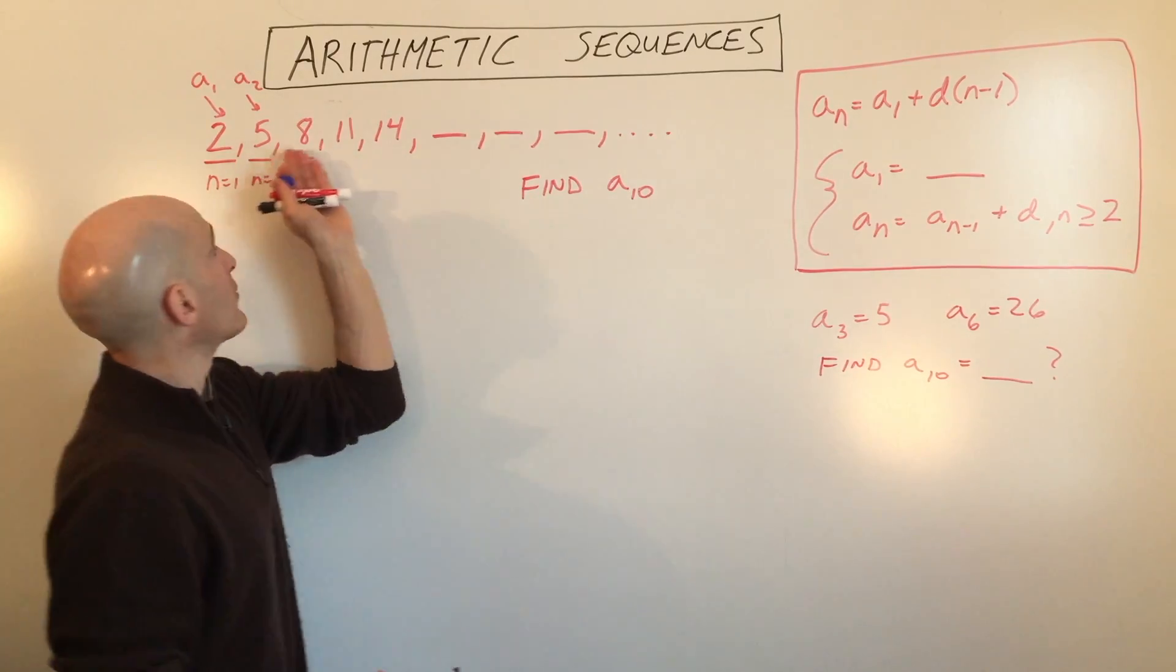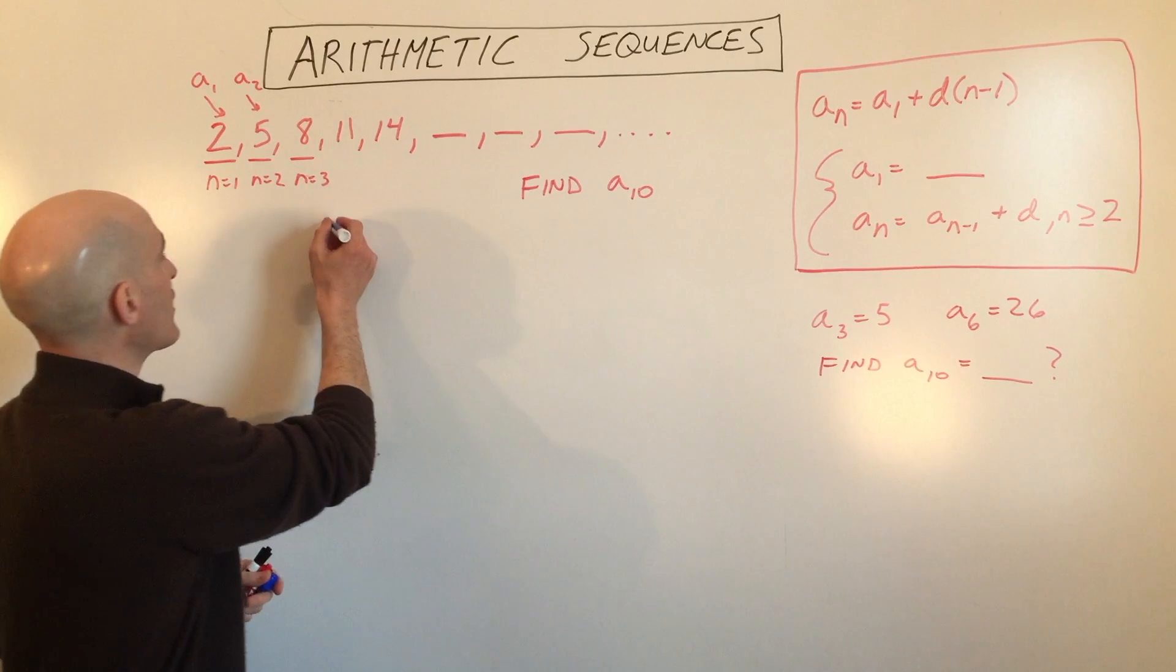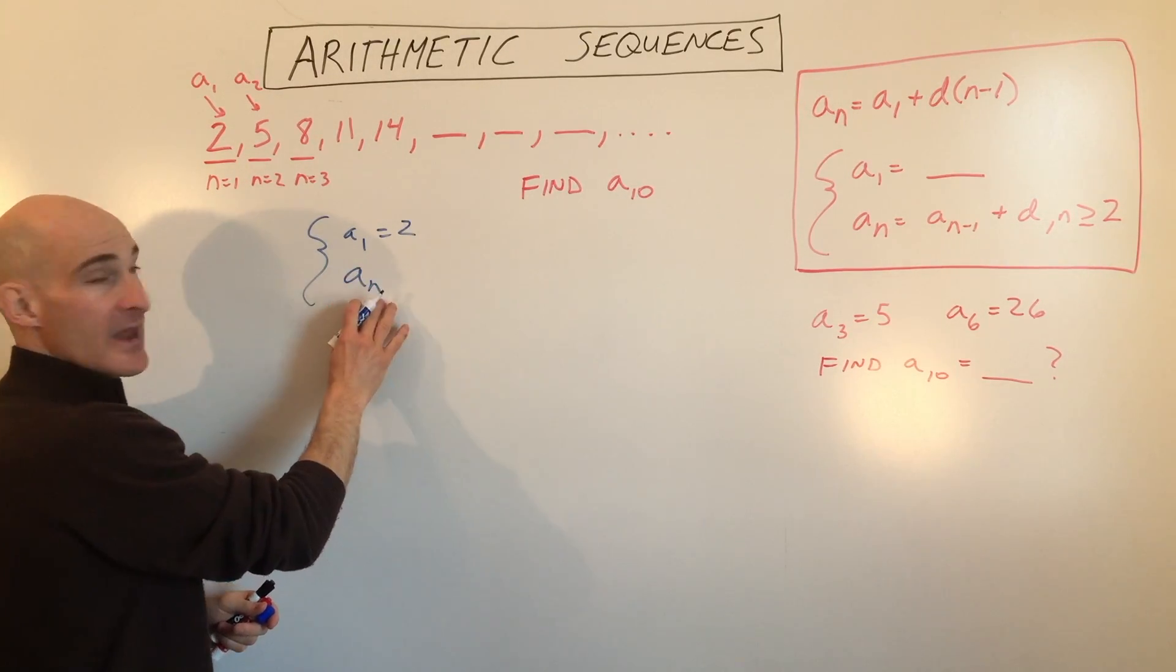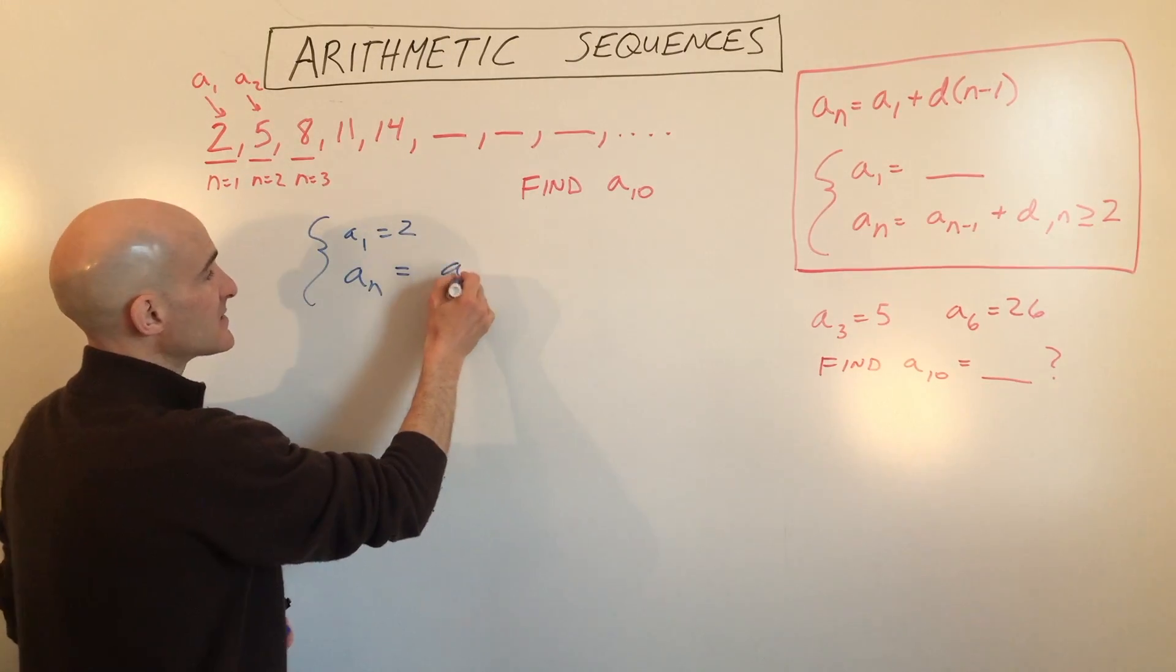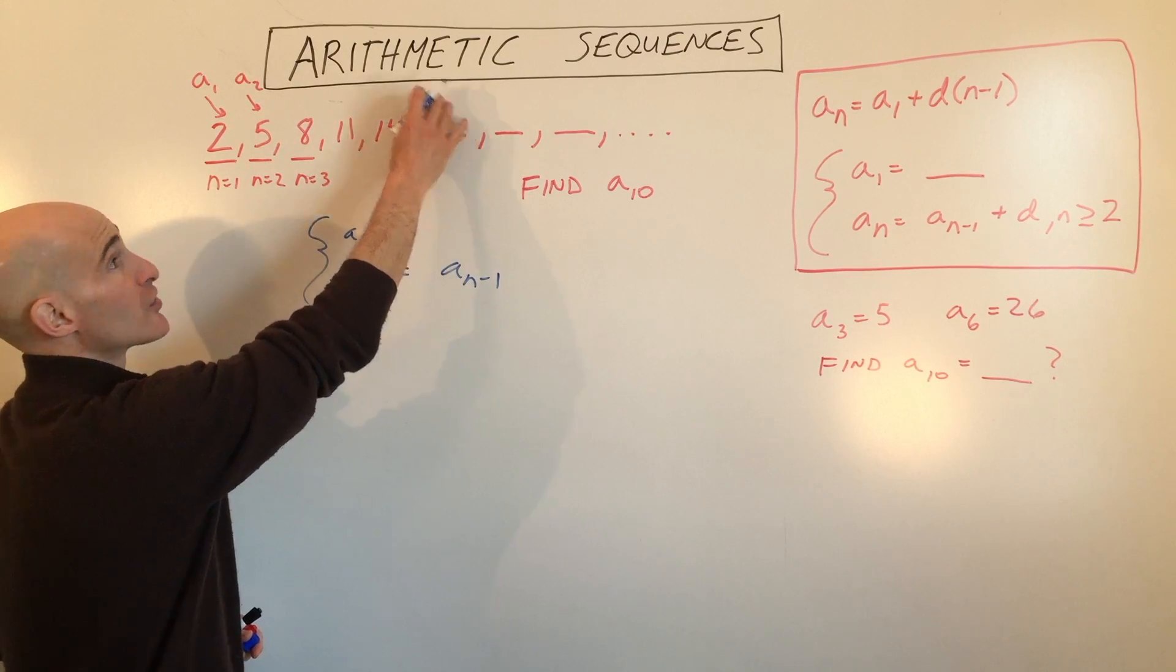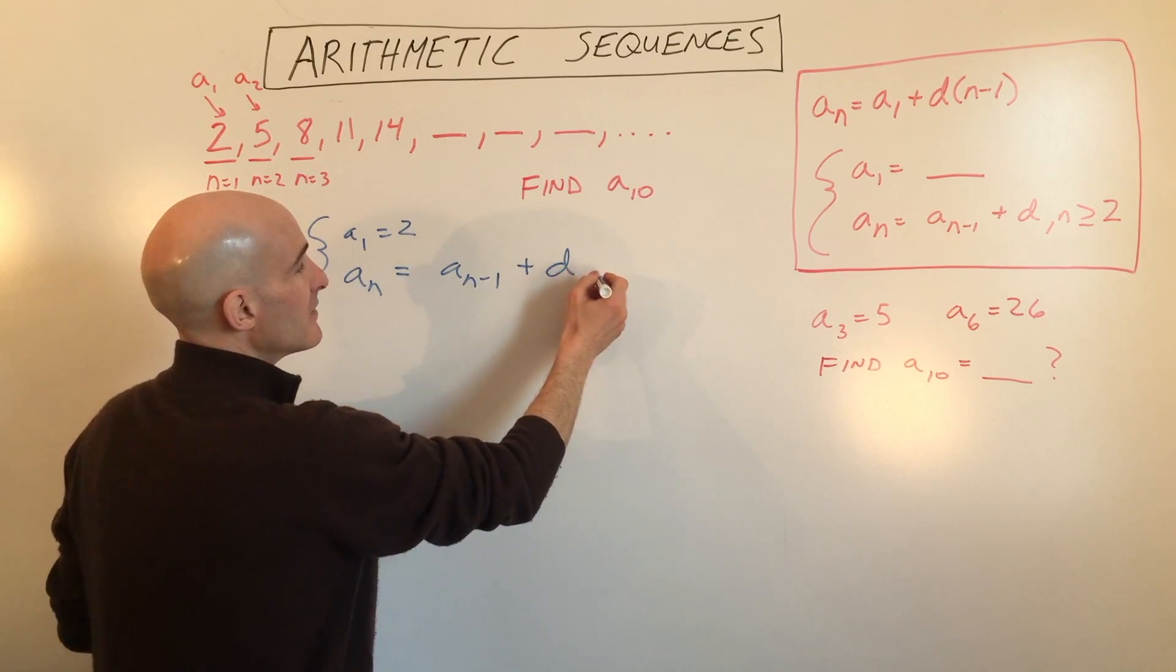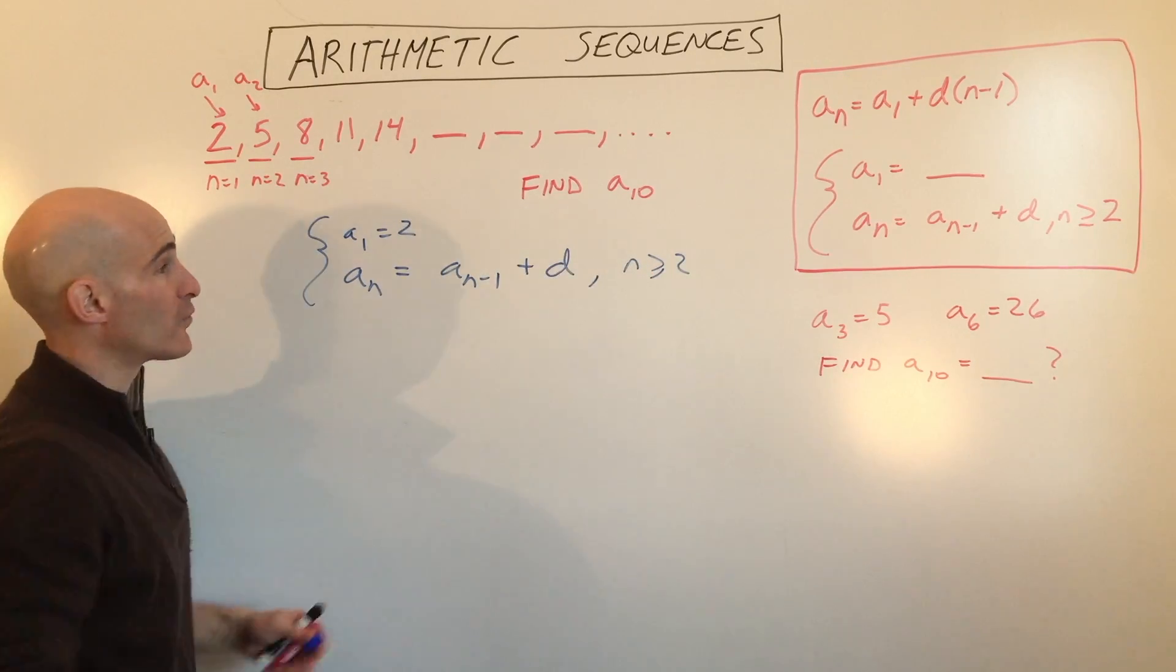So for example, for this one right here, if we were to write a recursive formula, what we're going to do is we're going to start off by saying a sub 1, which is our first term, 2, and then a sub n, this is the nth term, you're going to take the a sub n minus 1, so n minus 1 just means that you're going to go, if you want this term, you go to the previous term, plus d, and this is when n is greater than or equal to 2, meaning the second term, third term, fourth term. Now, what is d?